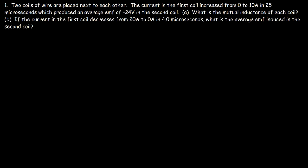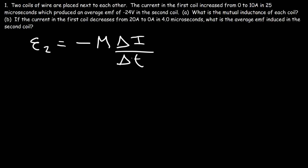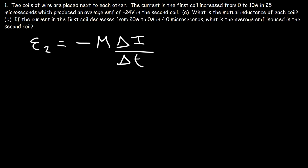Now let's focus on this problem. Two coils of wire are placed next to each other. The current in the first coil increased from zero to ten amps in twenty-five microseconds, and that produced an average EMF of negative 24 volts in the second coil. What is the mutual inductance of each coil? The induced EMF in the second coil is equal to negative M times the change in current divided by the change in time. The induced EMF depends on how fast the current is changing and on the mutual inductance. Our goal is to calculate M.